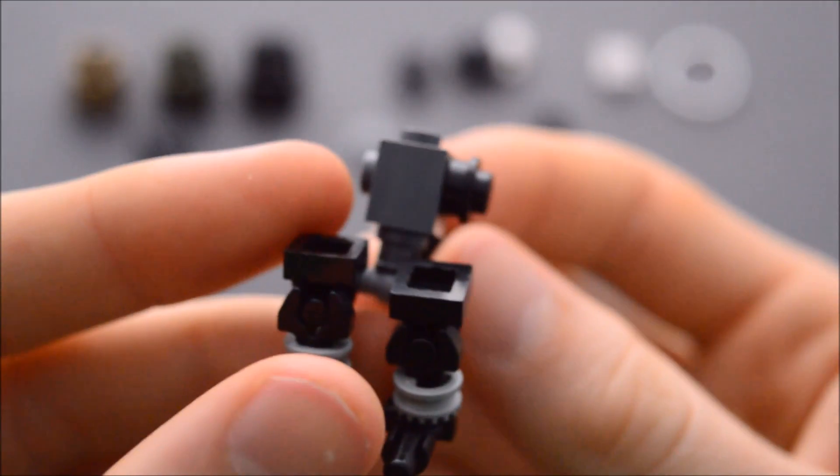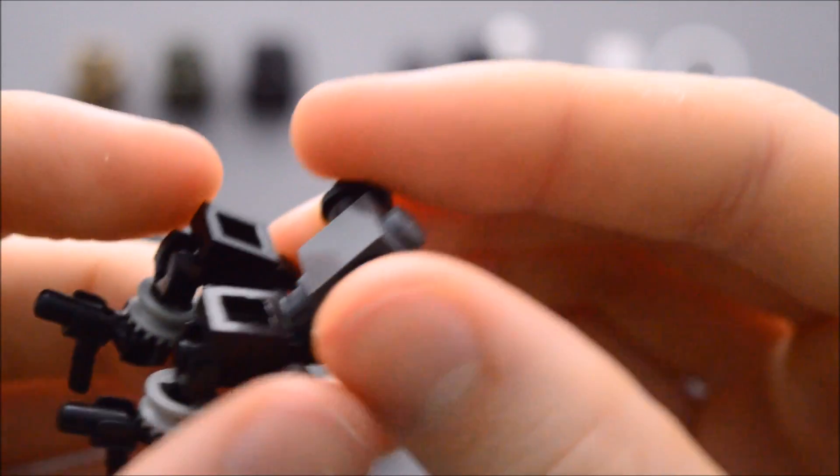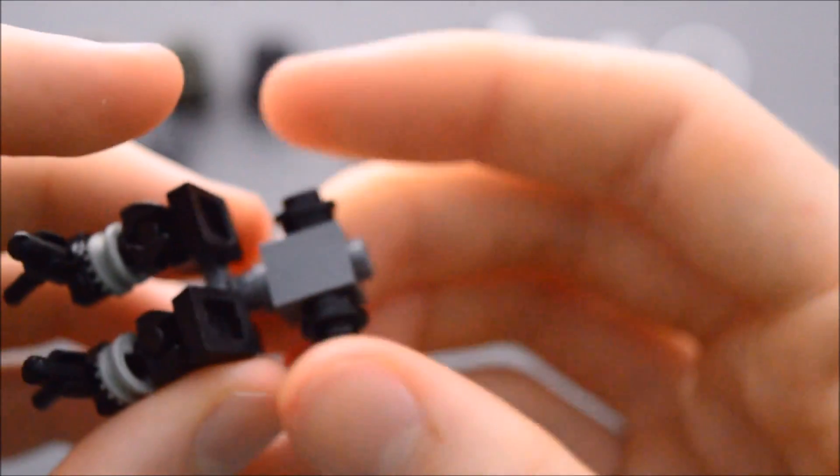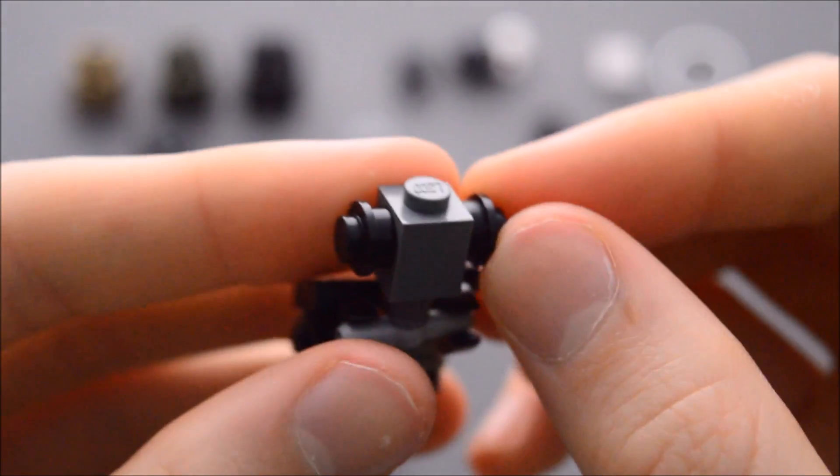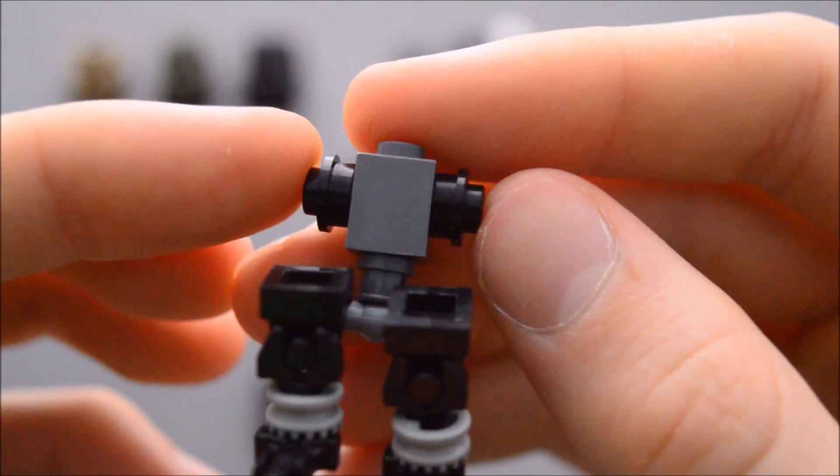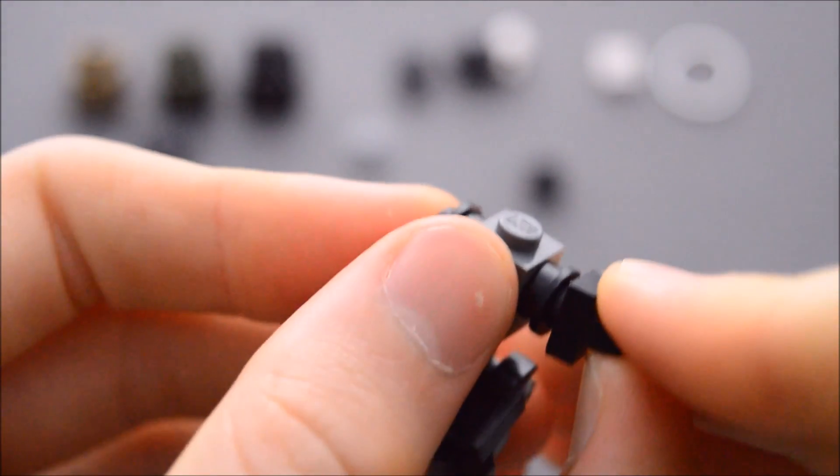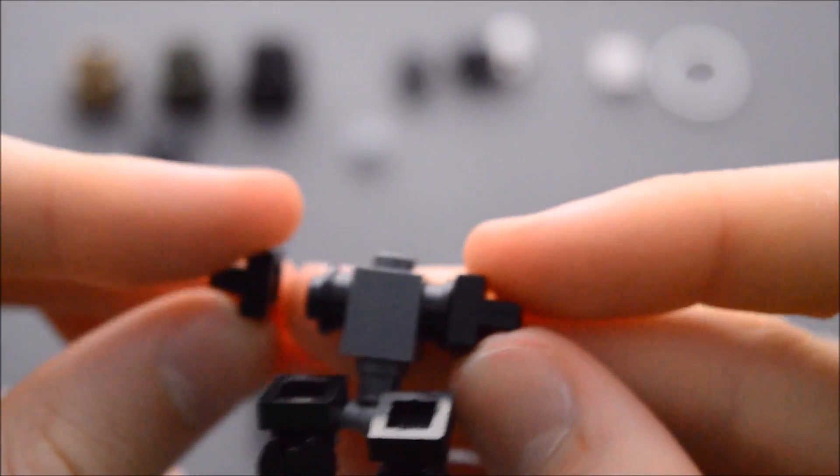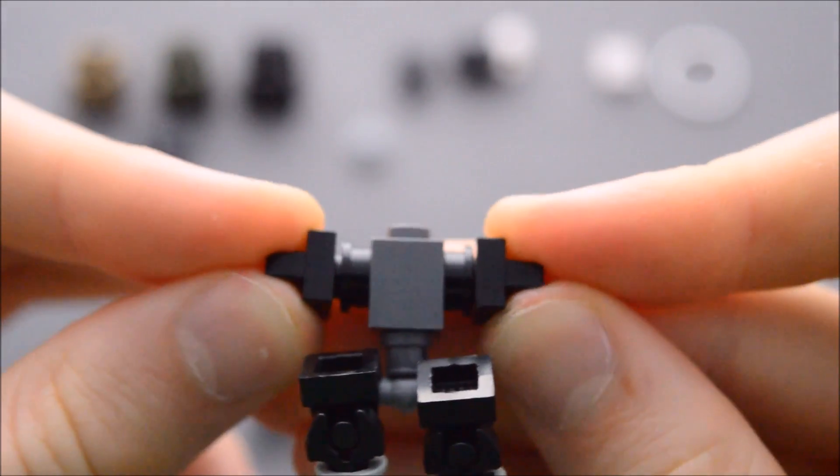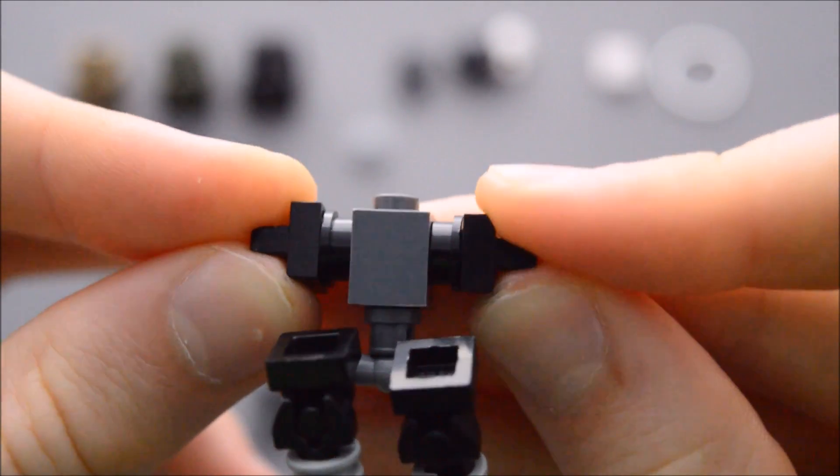Next we're going to make the arms. So we need to put a black round one by one plate on both sides. Make sure it's all the way attached. Then we're going to use two more clips and put them on both sides.